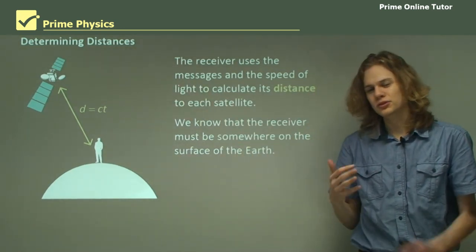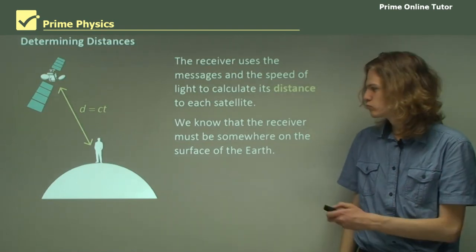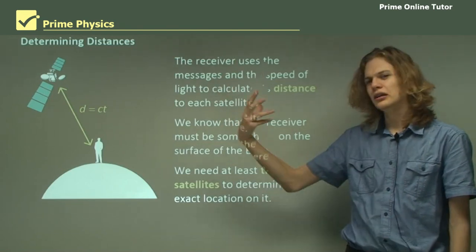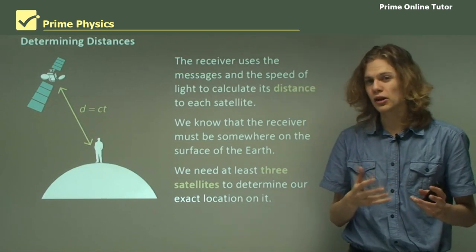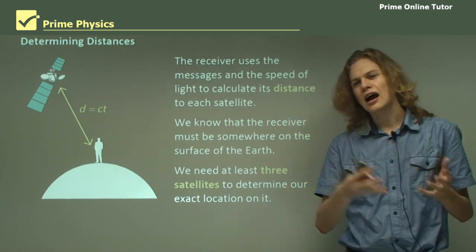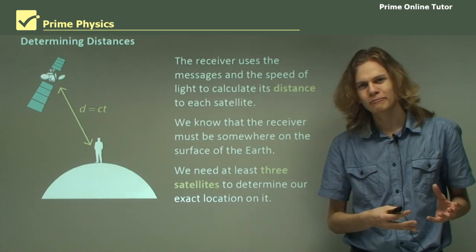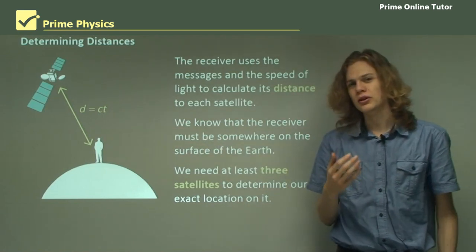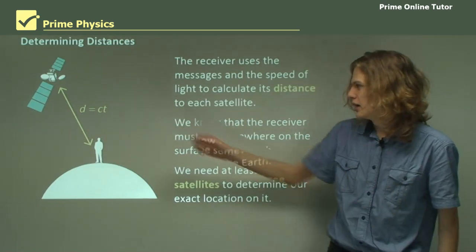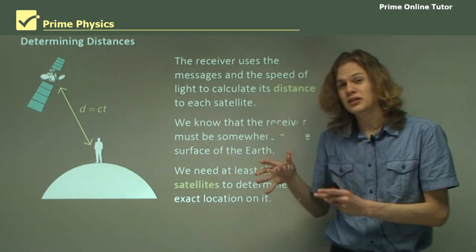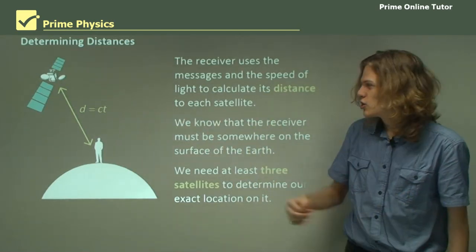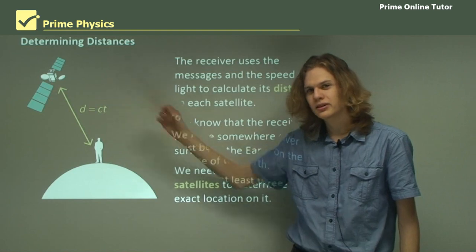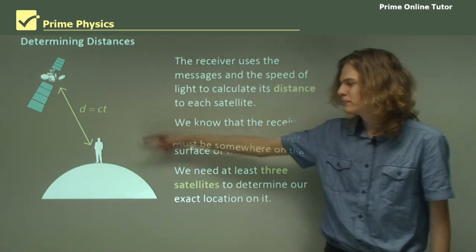If we have three satellites and they're all sending a certain time from their clock, we can determine exactly how long it took for each message to get there. That's our value for t. We know that the messages travel at the speed of light, and so that's c. And we know that distance equals speed times time. So by taking the time delay of the clock reading, multiplying by the speed of light, we can get the distance between the receiver and the satellite.